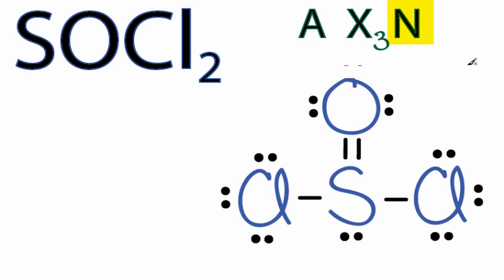And N, that's the number of non-bonding electron pairs, called lone pairs sometimes. We have these two right down here, so we'll put one pair for the N.